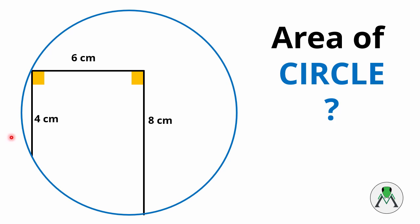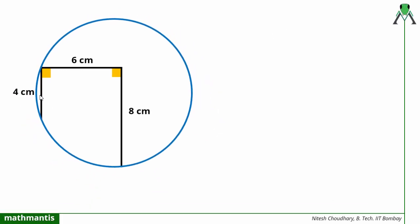Hello everyone, welcome back to my channel Mathematics. In this video we are going to discuss another interesting geometry problem involving circles. We have been given three lengths 4 cm, 6 cm, 8 cm and two 90 degree angles. Using this information we have to find the area of this blue circle. We will discuss two methods by which we can solve this question. If you have any other method in mind, feel free to share in the comments below. So let us start solving the question.